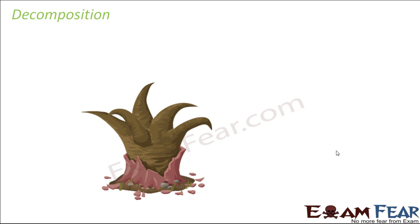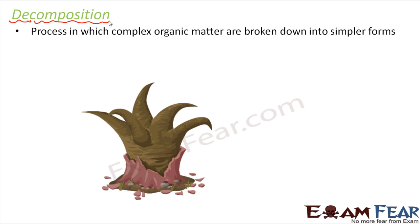Let us see what happens in decomposition. There is a group of organisms called decomposers, and their job is to decompose dead and decaying matter — they break down the dead animals and plants. Decomposition, if you look at the name, it is 'de' plus 'composition.' Composition means formation, so decomposition means breaking down — the opposite of formation. It is a process in which complex organic matter is broken down into simpler forms.